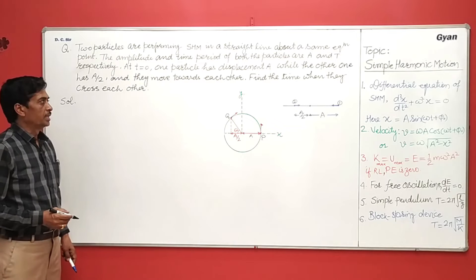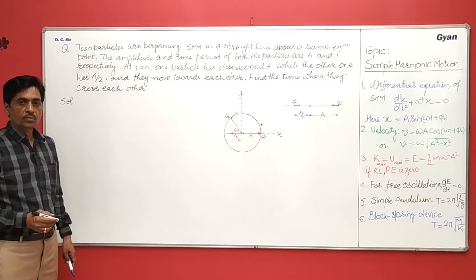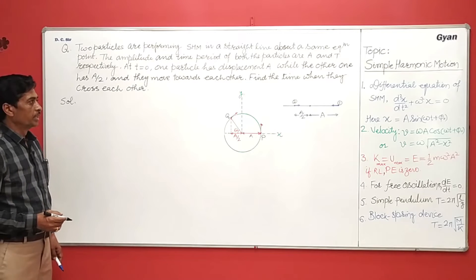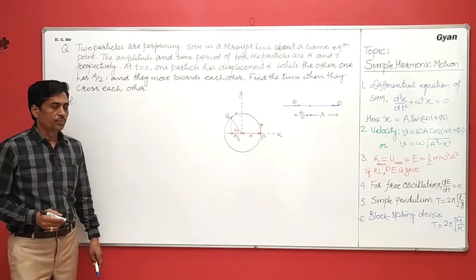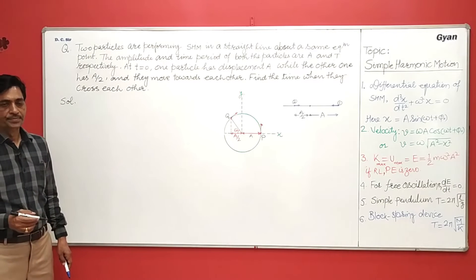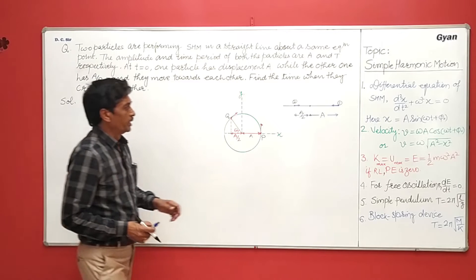At t equals 0, one particle has a displacement a while the other one is at a by 2, and they move towards each other. Find the time when they cross each other. So here there are two particles.